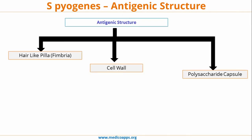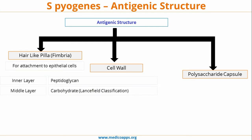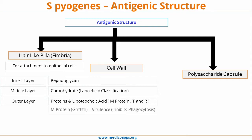Let's move forward to the antigenic structure of Strep pyogenes. In antigenic structure we will see three different components. First is the hair-like pili which helps in attachment to epithelial cells. Then the cell wall: the inner layer is peptidoglycan, the middle layer is carbohydrate. The carbohydrate layer is also used in Lancefield classification, and according to Lancefield classification Strep pyogenes belongs to Group A.